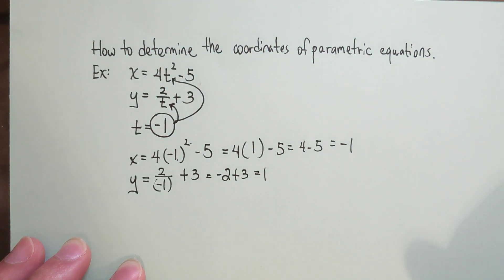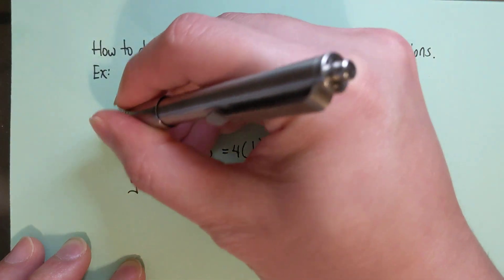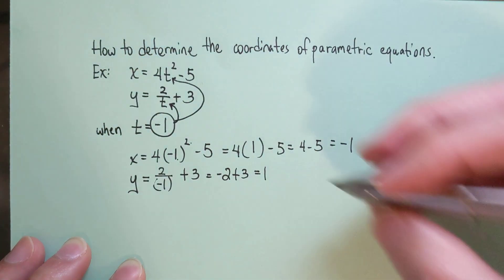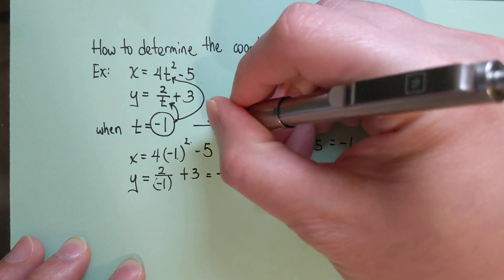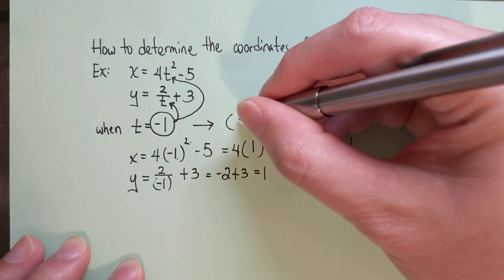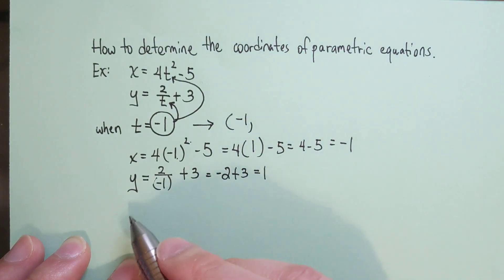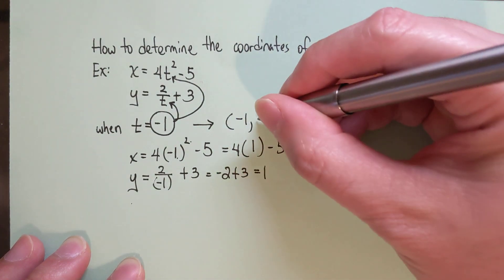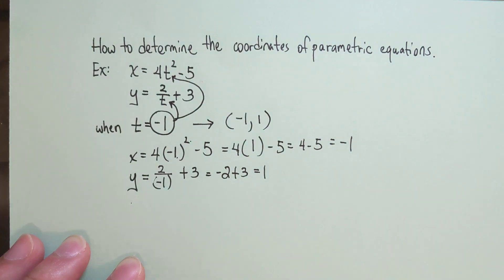So therefore, when t is negative 1, that will lead us to a coordinate of x value, which is negative 1, and a y value, which is positive 1. That's where your coordinates will be.